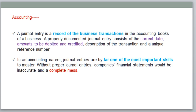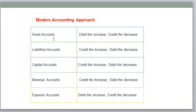Let's go to the modern approach. In the modern approach, account types can be classified into five types: asset accounts, liabilities, capital accounts, revenue accounts, and expense accounts.